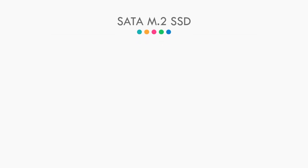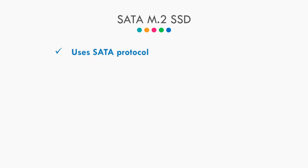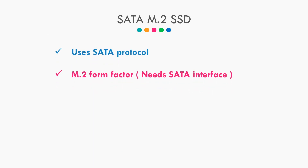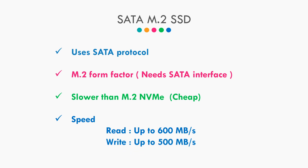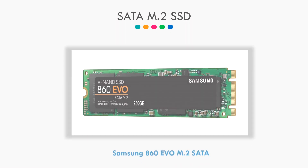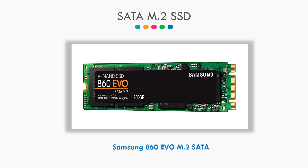Now let's talk about the second type of SSD, which is SATA M.2. SATA M.2 uses the SATA protocol and comes in the M.2 form factor. The connection interface needed is SATA, and since it uses SATA it is obviously slower than NVMe M.2. The read speed of SATA M.2 goes up to 600 Mbps, whereas the write speed goes up to 500 Mbps — a huge difference compared to NVMe M.2, but still way better than a traditional hard drive. An example is the Samsung 860 EVO M.2 SATA.